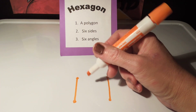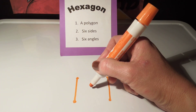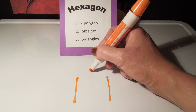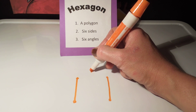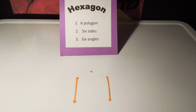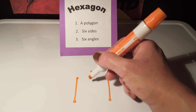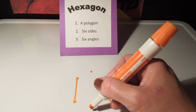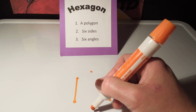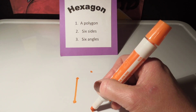Next, I go to the center of my two line segments, go straight up, and put another point. Then I go straight down and draw another point.